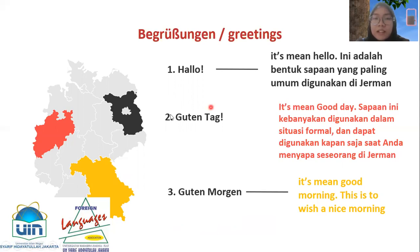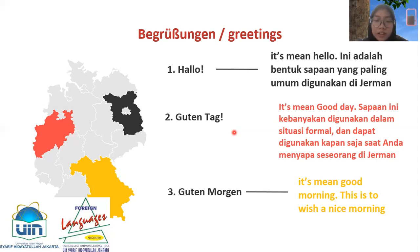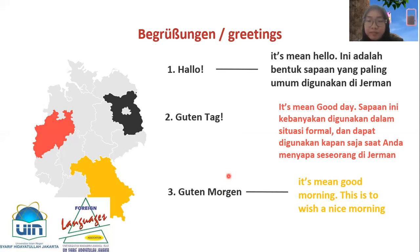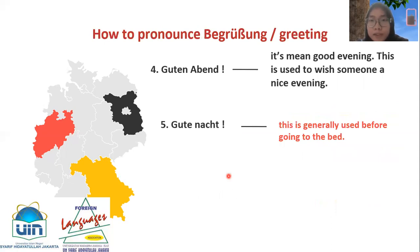When greeting someone, don't forget it's very important to make eye contact — not just in German but with everyone. If possible, we can also offer a handshake. Next, there's 'Guten Morgen', which means 'good morning'. The R is somewhat silent — like 'Guten Morgen'. Next, 'Guten Abend' means 'good evening', used to wish someone a nice evening.